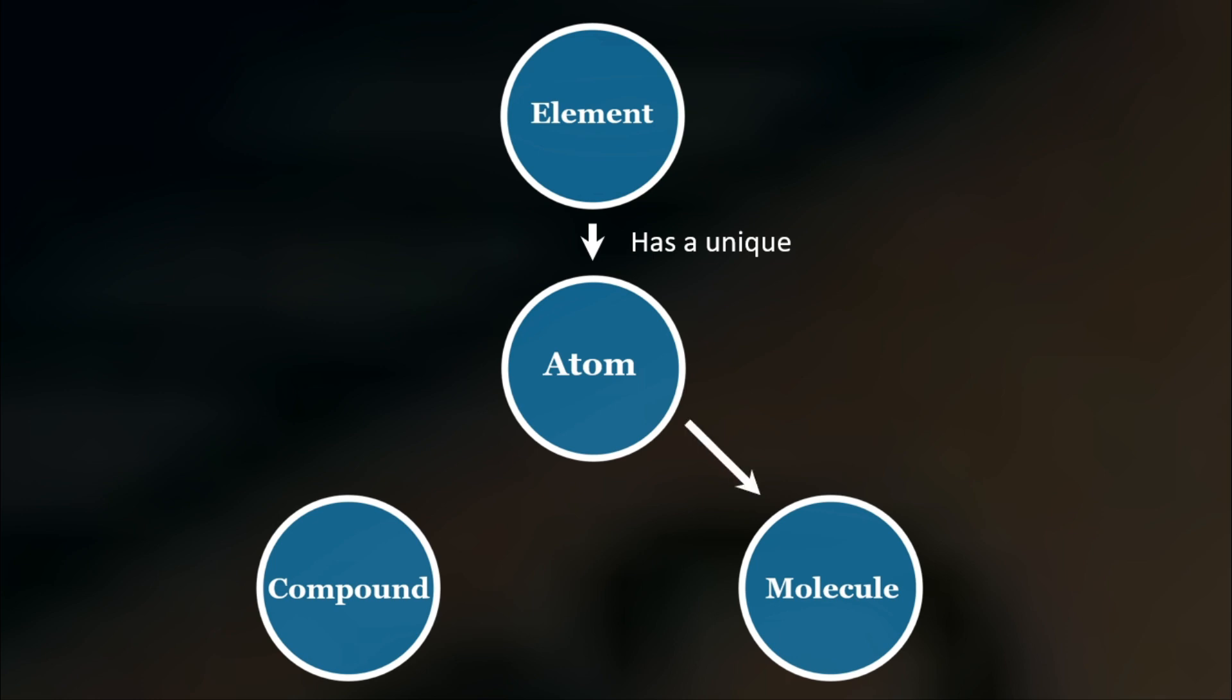When atoms of the same element combine, it will form what we call a molecule. On the other hand, if atoms of different elements combine, it will form what we call a compound. And a compound is a molecule.